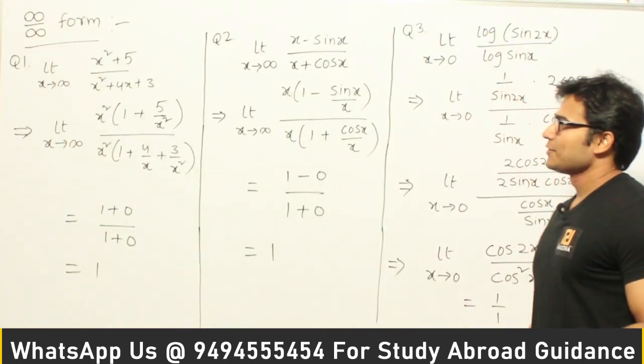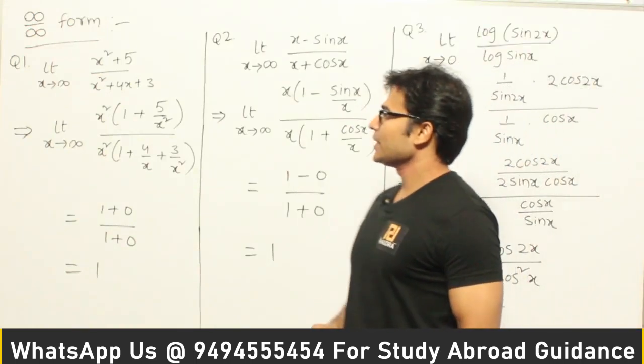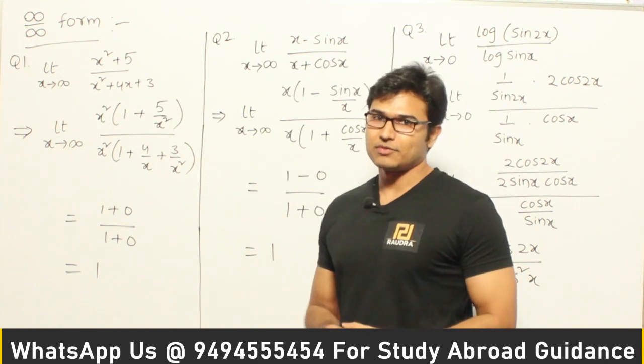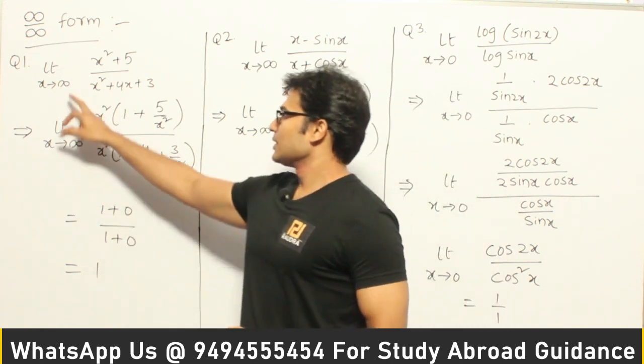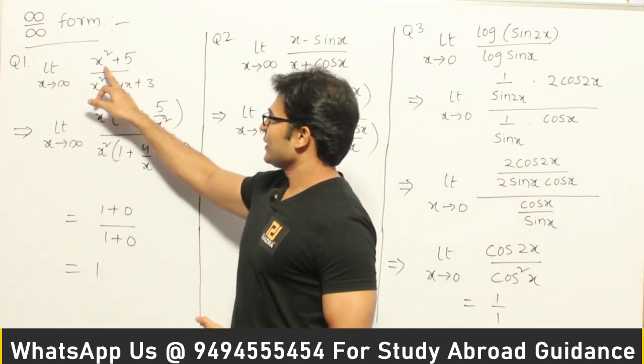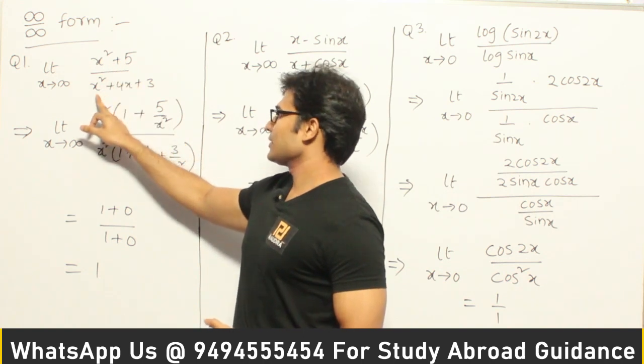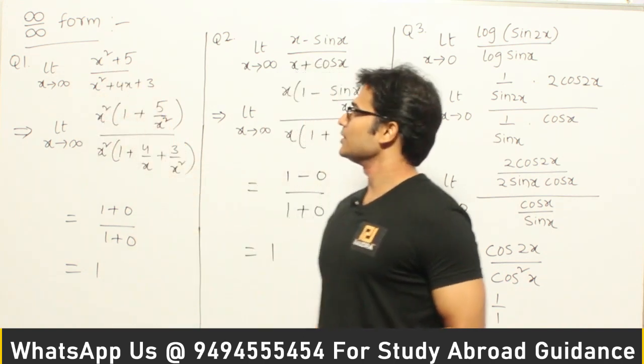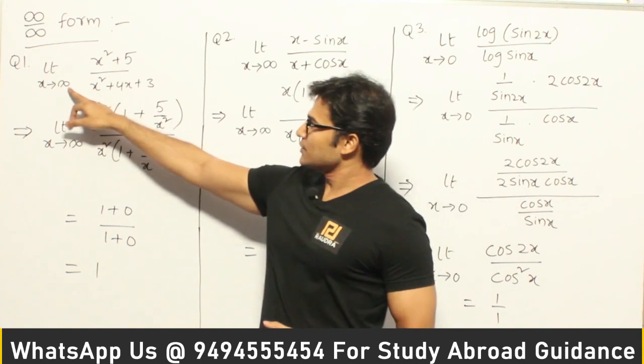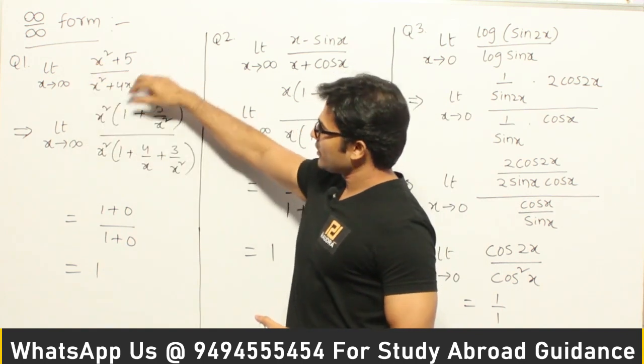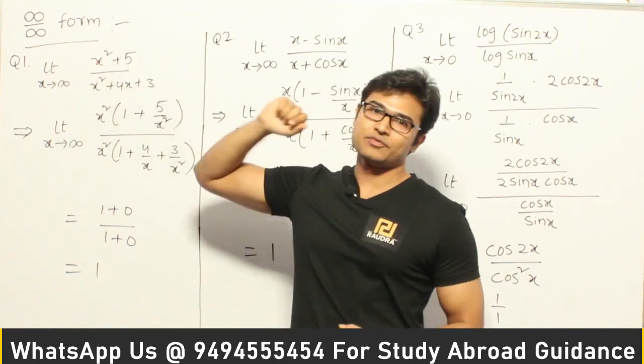Now, let us solve this question. Again, we are solving the examples where we get infinity by infinity form. So if you observe this, limit x tends to infinity, x² + 5 over x² + 4x + 3. Now, if you try to substitute this infinity over here, you are going to get both numerator and denominator as infinity.